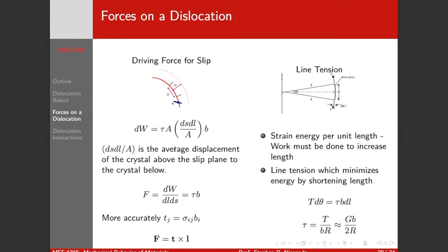So this is our strain energy density. If we think about this as the average displacement of above the slip plane to that below, this is ds, our line length, so ds dl by a. And so our force is then given by the derivative here. So we're left with tau b. Tau is the resolved shear stress, and we can write this in terms of the traction vector.